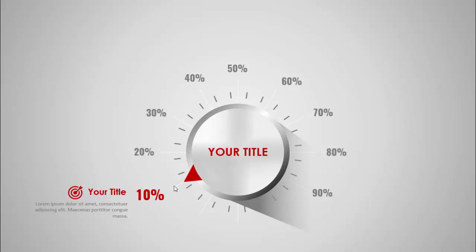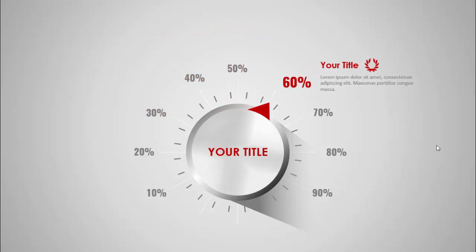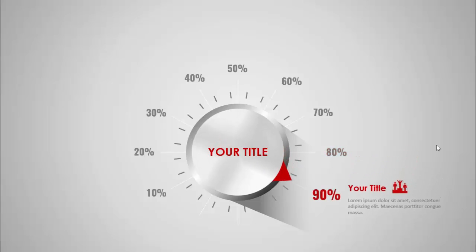I have created this kind of a volume knob — you can see I've put the percentage here: 10, 20, 30 till 90 percent. Maybe you can use this slide for sales, since currently a lot of Black Friday and White Friday sales are going on. At 10%, your title can be added here along with the icon and detailed text. When I click, the knob will turn and move to 20%, with 20% highlighted and the text displayed.